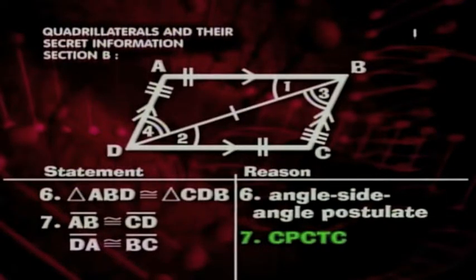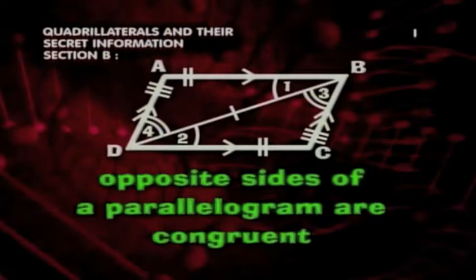See? AB and CD correspond, as do DA and BC. So they're congruent. And we've proven our theorem. Opposite sides of a parallelogram are congruent.